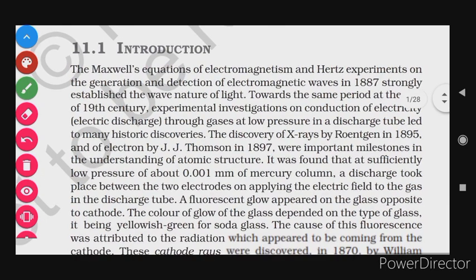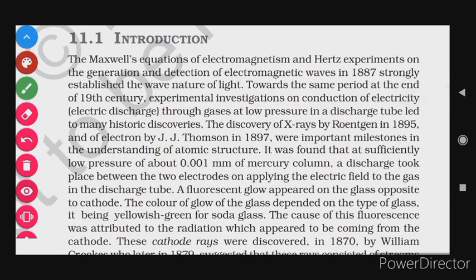Maxwell's equations of electromagnetism and Hertz's experiments on the generation and detection of electromagnetic waves in 1887 strongly established the wave nature of light. In Chapter 8 on electromagnetic waves, we have seen that Maxwell confirmed light is an electromagnetic wave, and Hertz experimentally proved the wave nature of light.